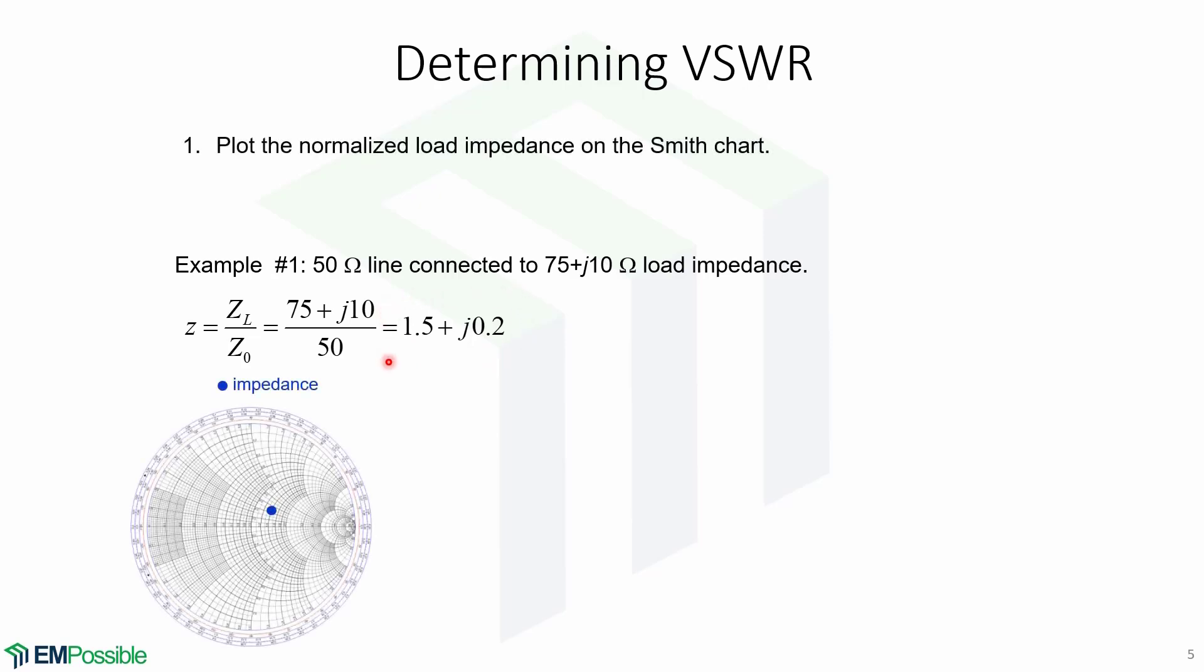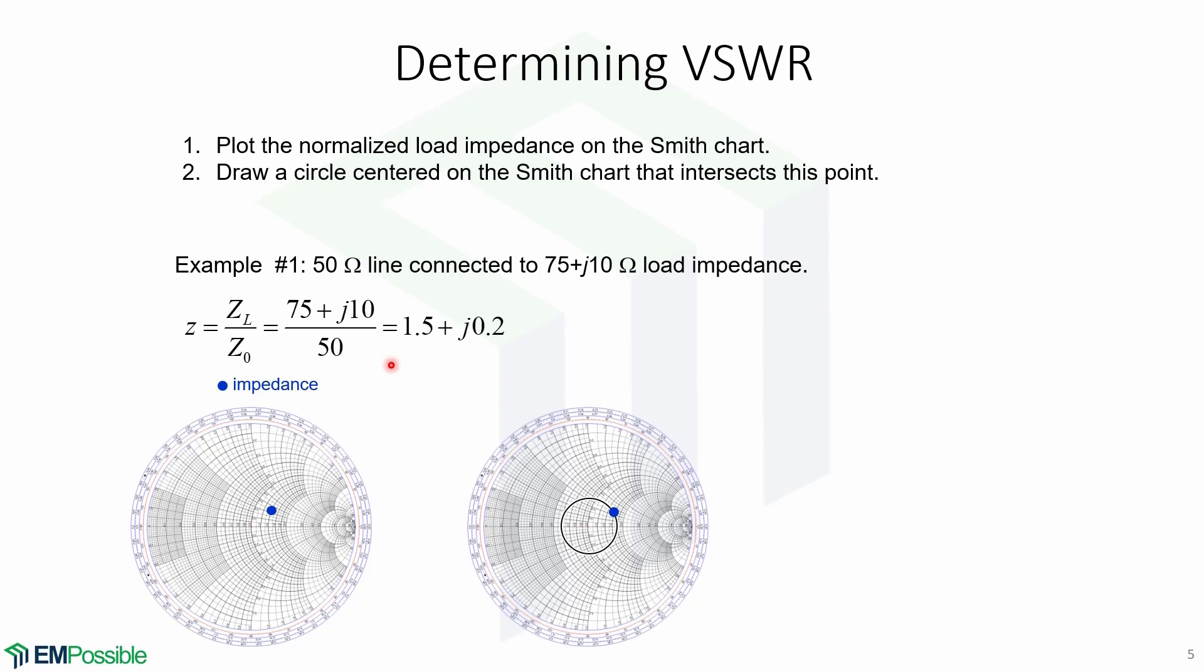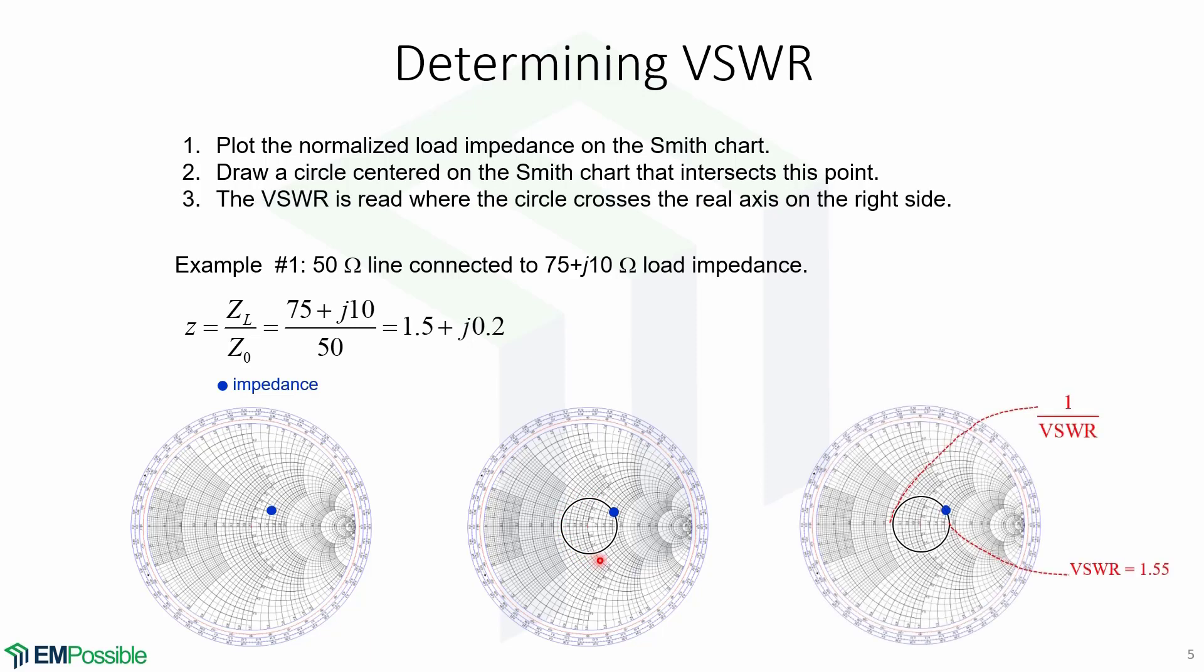The first step is to plot the normalized load impedance on the Smith chart. The second step is to draw a circle centered on the Smith chart that intersects this point. Finally, the VSWR is read where the circle crosses the real axis on the right side. In this case, the VSWR is equal to 1.55.